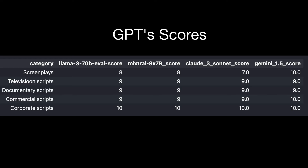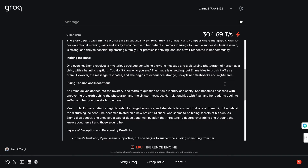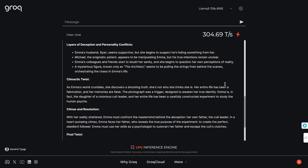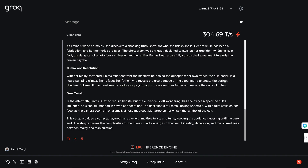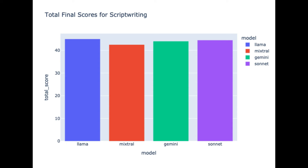Then comes script writing — another use case where all models did fairly well, but Llama 3 70 billion again outperformed the others. The attention to detail and structure across television scripts, commercial scripts, corporate scripts, and screenplays was really good. The first draft itself is maybe 30 to 40% there, with 60% of the work still requiring manual curation. But it does a pretty good job as per the prompt instructions. Llama 3 70 billion topped the charts for script writing across almost all categories.